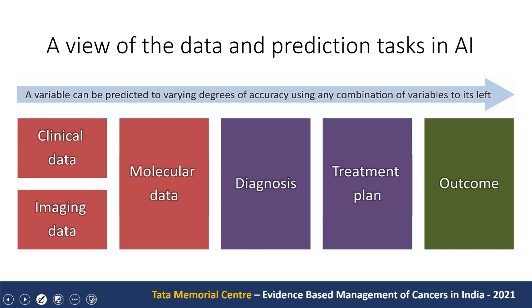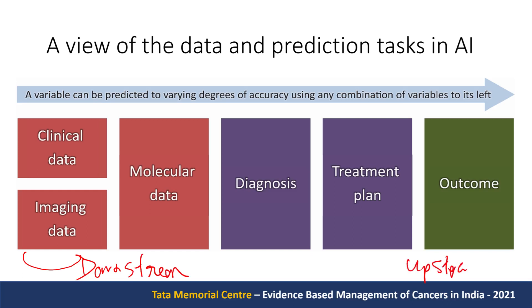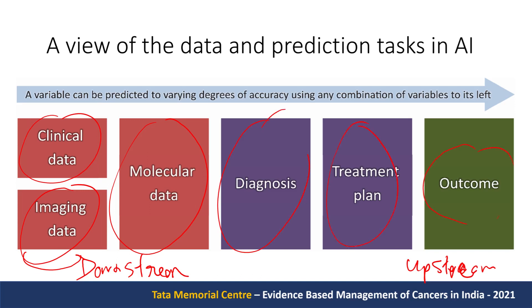Here is another view of the same idea. On the left-hand side you have downstream information and on the right-hand side you have upstream information. When you encounter a patient, you first see their clinical data and imaging data, then you might order molecular tests, then give a diagnosis and prescribe a treatment plan. After that, the treatment will be successful or not, or there will be relapse or no relapse. Anything on the left-hand side can be used to predict what is on the right-hand side to build a useful AI model.